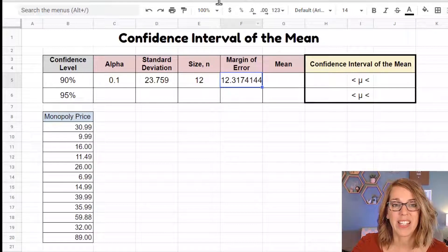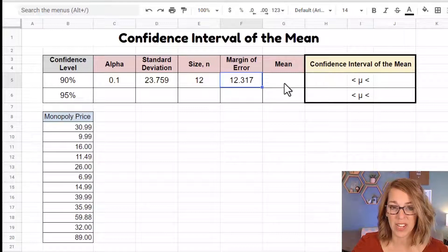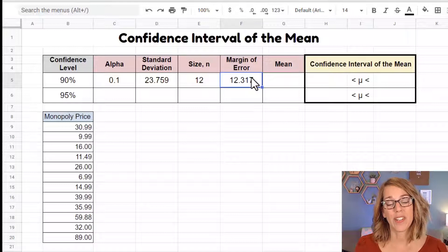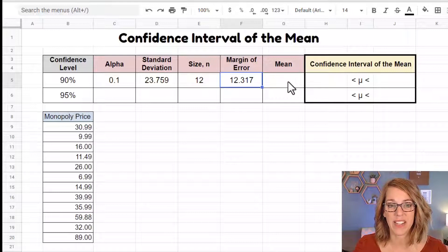I want to go ahead and give myself just a few decimal places here. I'll do three. So the margin of error tells me that I'm plus or minus 12.317 from my estimated mean. Let's do the mean next.